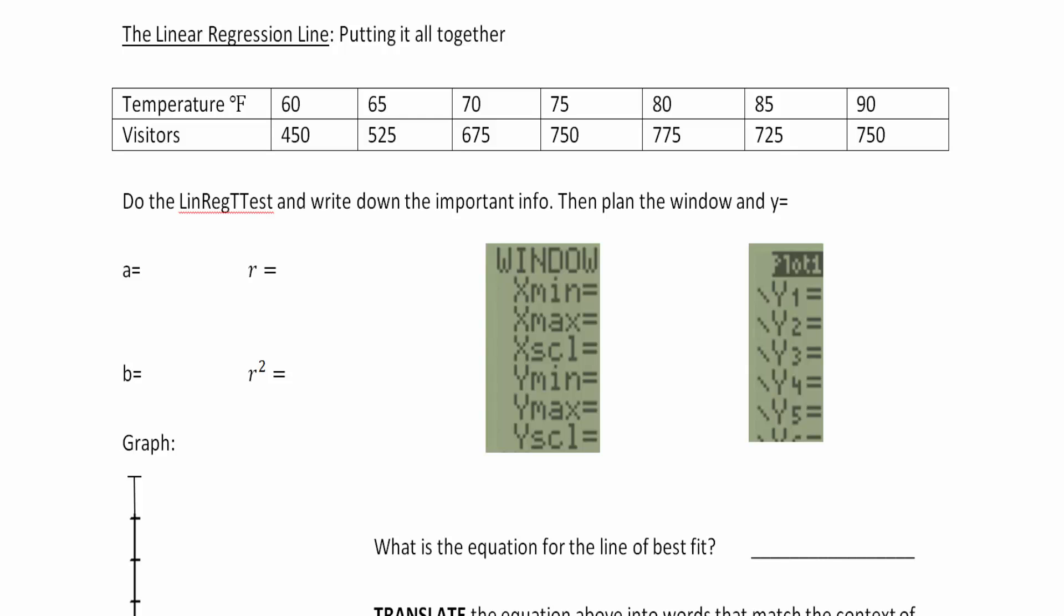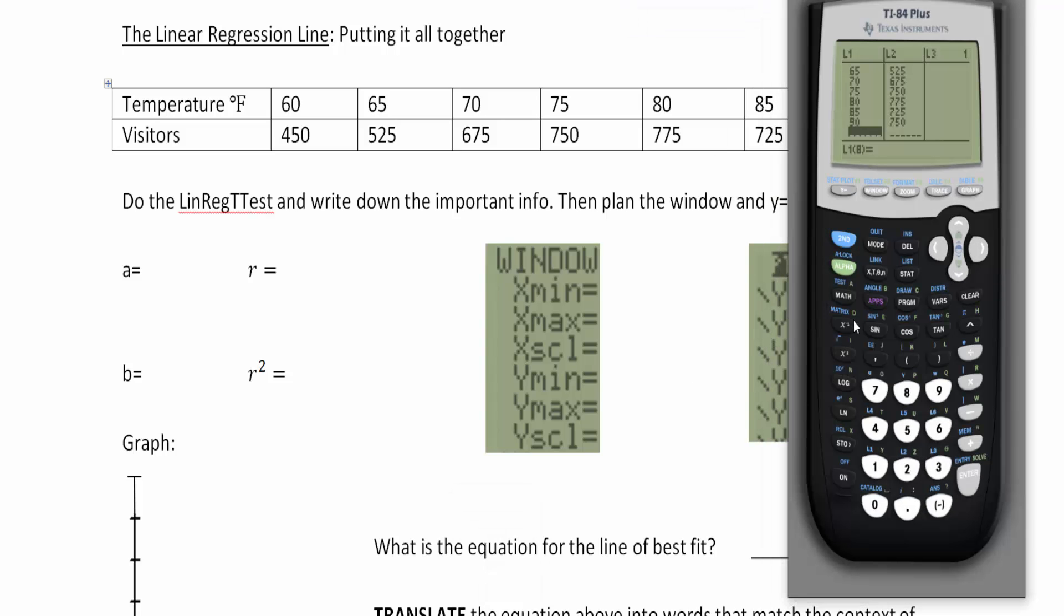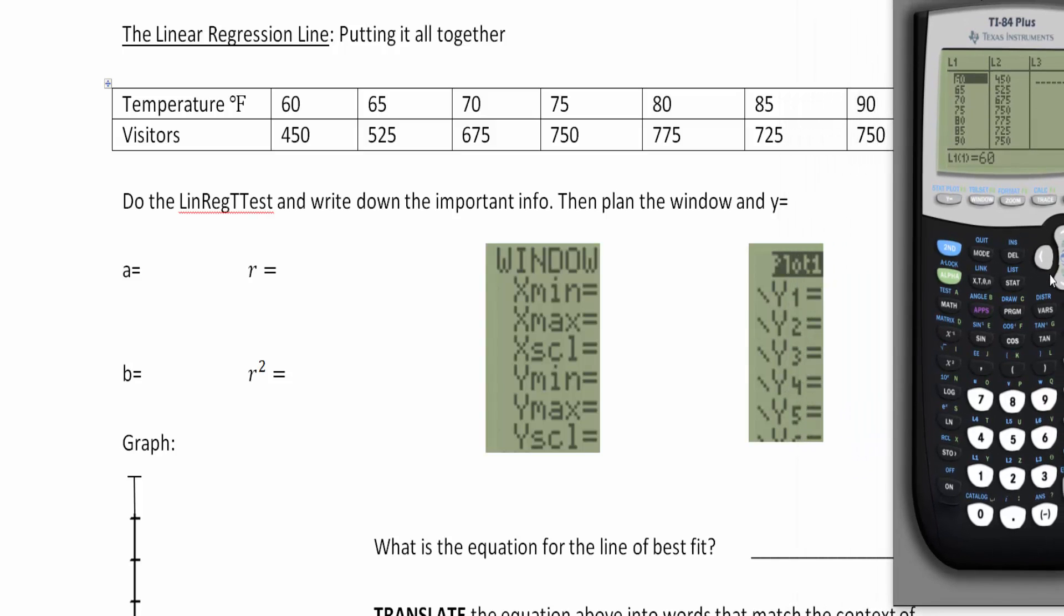First of all, prep your calculator. Get your calculators out and clear out list one and list two. By hitting stat enter you can then get to your lists, and I typed in all of my data. Please double check and triple check to make sure that this data matches where your temperature in degrees Fahrenheit is in list one and our number of visitors will be in list two.